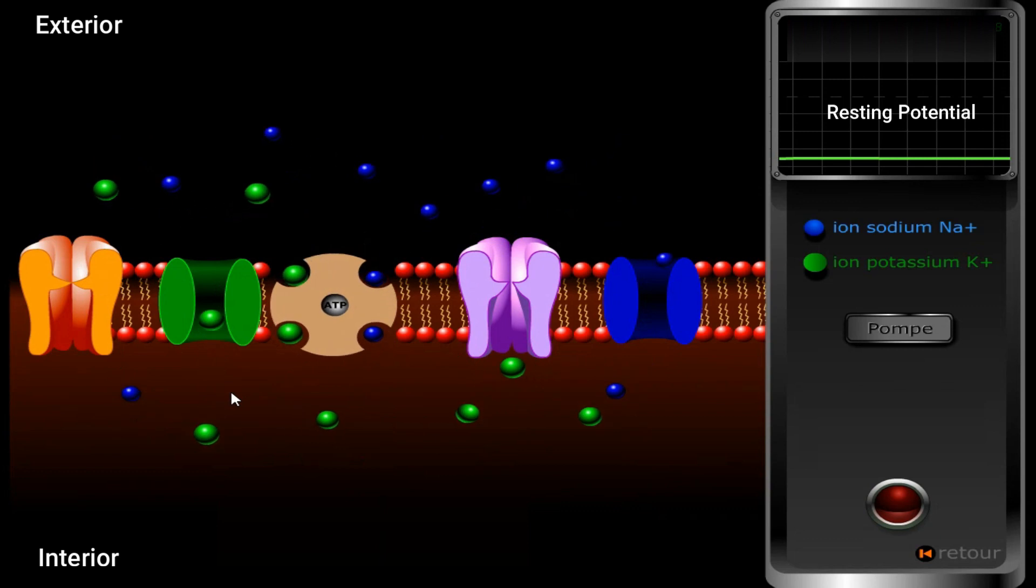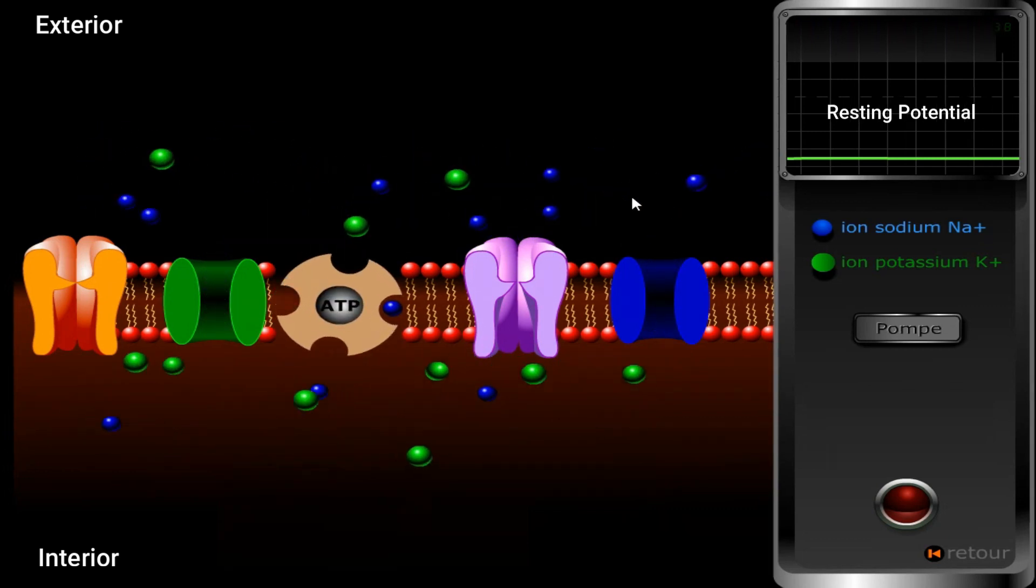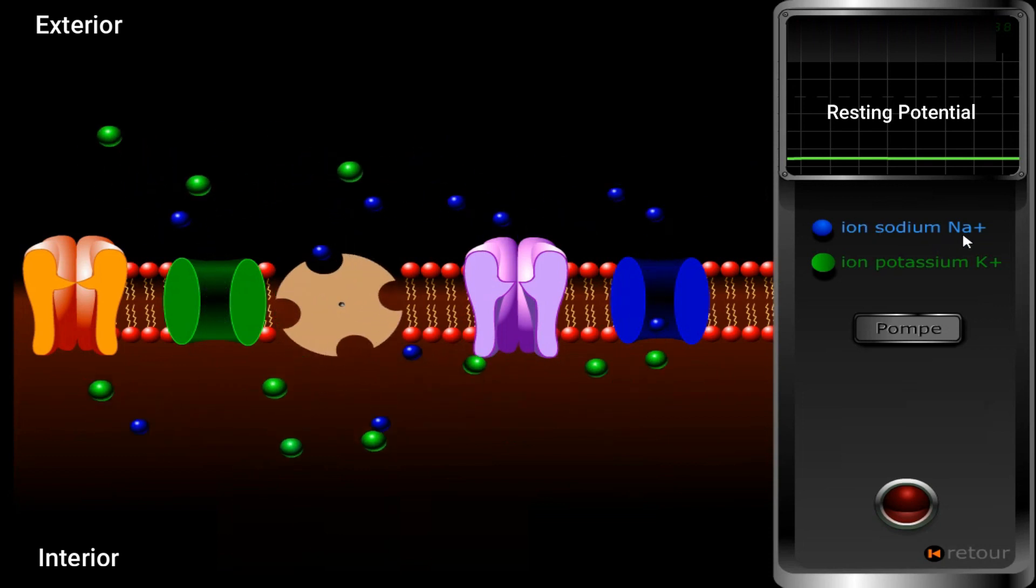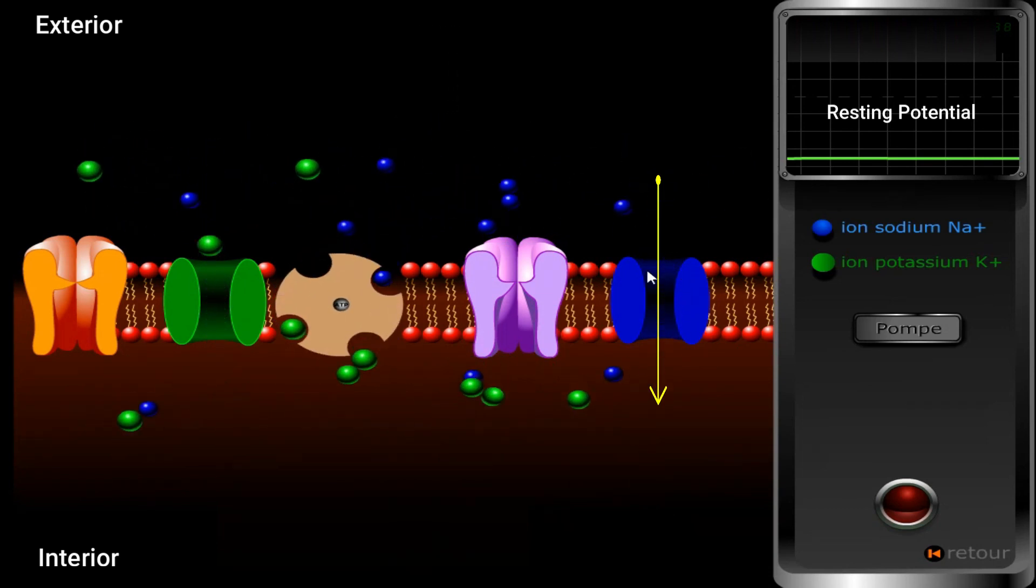How is the diffusion of ions done? As you see, the blue balls which represent the Na+ ions diffuse from the extracellular medium to the intracellular medium through the Na+ non-voltage dependent channels.